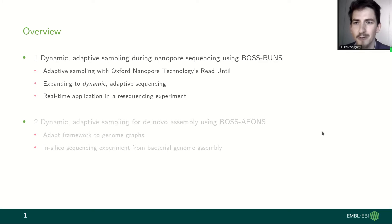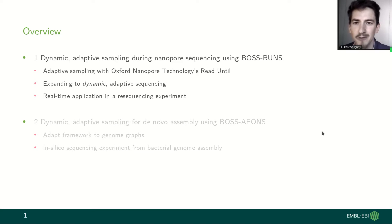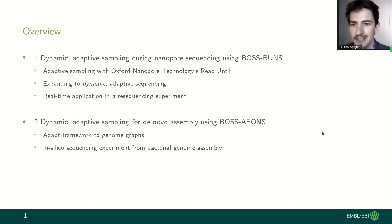I split my talk into two presentations. First I'm going to give a brief overview of adaptive sampling and the key developments in the field and how we expanded to dynamic adaptive sequencing and show a real-time application of our new method. Then in the second part I will talk about how we adapt the same framework to be able to use it during de novo assembly.